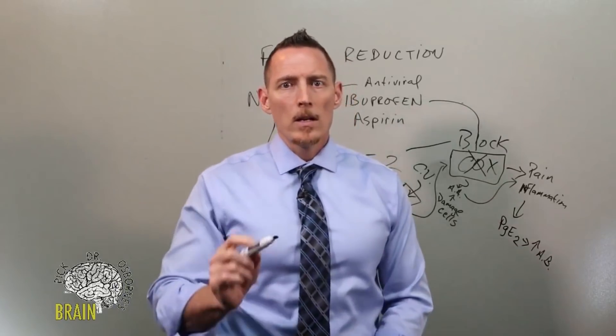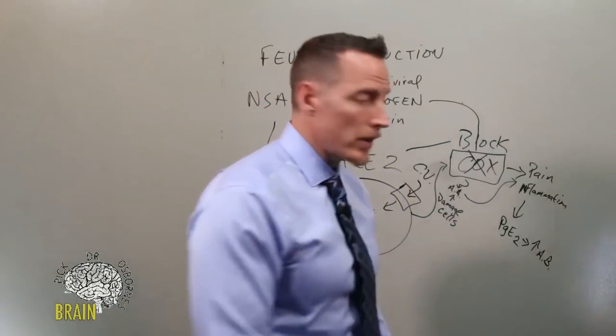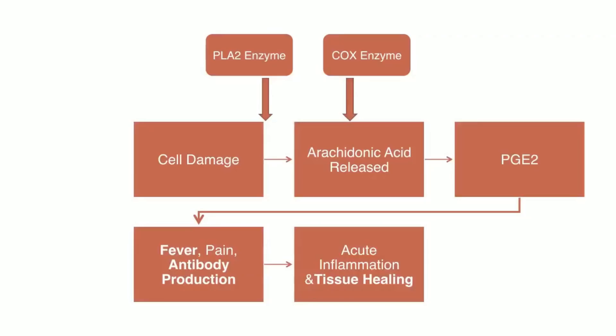Here's what you're looking at on this particular slide — I'm going to erase my board while I'm talking to you. What you should be looking at are a bunch of orange boxes. On the top you see a couple of different chemicals: there's phospholipase A2, abbreviated as PLA2, and then you see another chemical on the other side called COX enzyme. Those two things come into play when there is cell damage — you'll see a box on the left that says 'cell damage.'